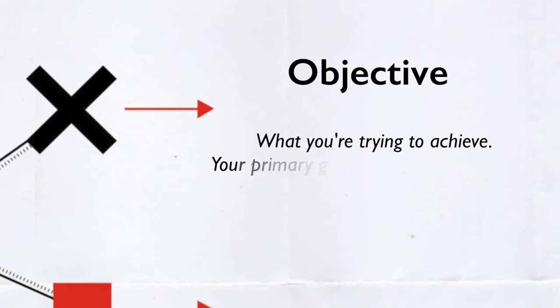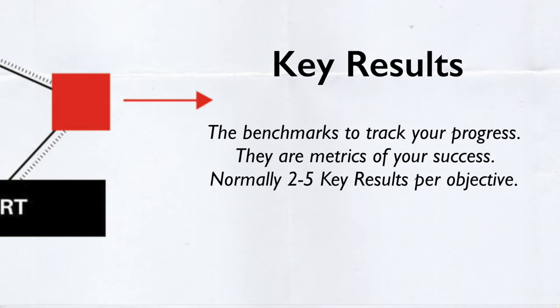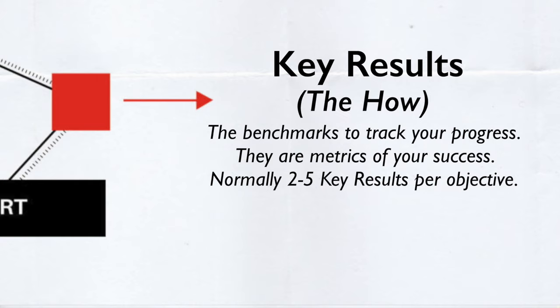Simply put, an objective is what you're striving to achieve. It is your main goal that informs your actions and process — the "what" you are working to accomplish. For every objective, you have two to five key results. The key results are the benchmarks you use to track your progress. They serve as metrics of your success and indicate whether you are heading in the right direction.